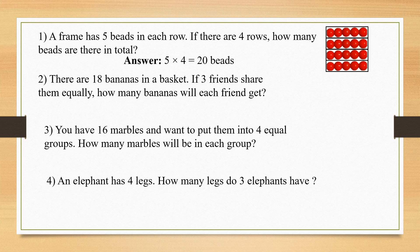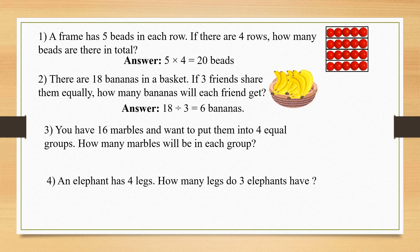Next question: there are 18 bananas in a basket. If three friends share them equally, how many bananas will each friend get? This is based on division because you are going to share. The answer is 18 divided by 3, that is 6 bananas.